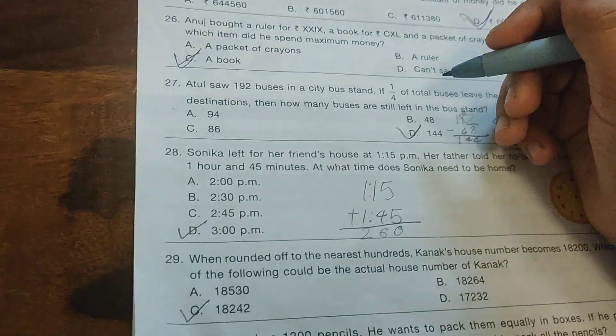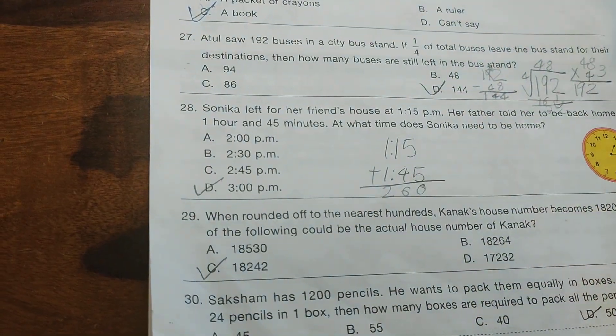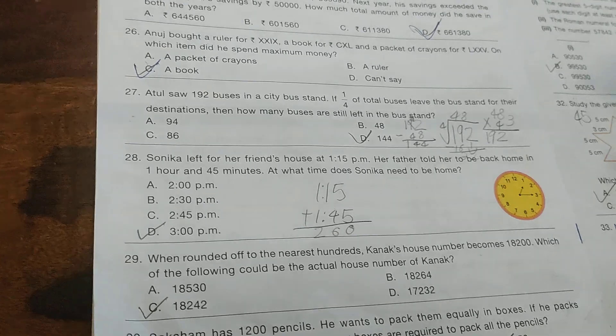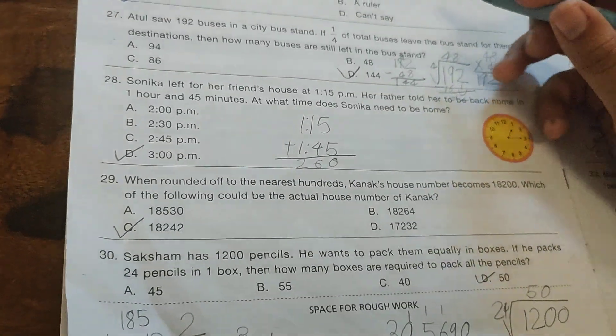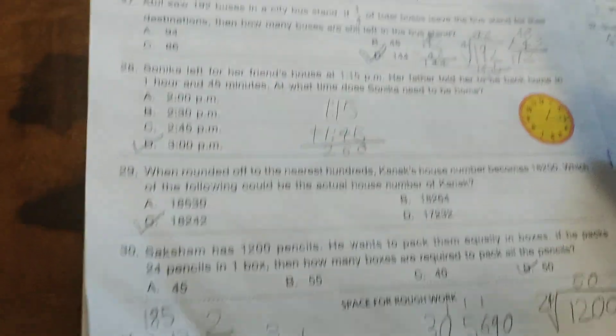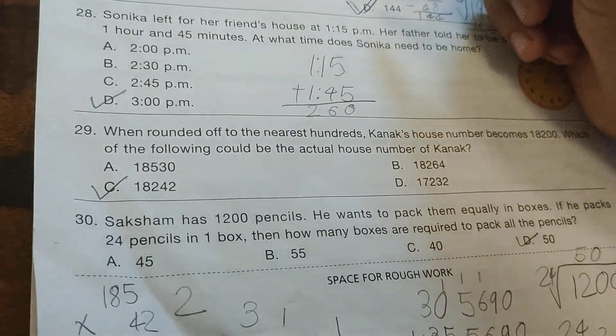There are 192 buses at a city bus stand. One-fourth of the total buses leave for their destination. How many buses are still left at the bus stand? The option is 144, because three-fourths of 192 equals 144.